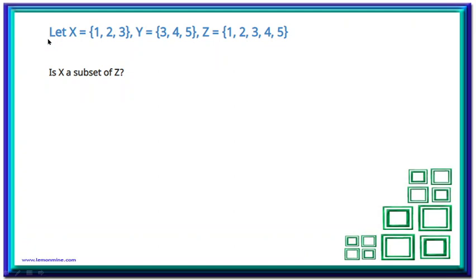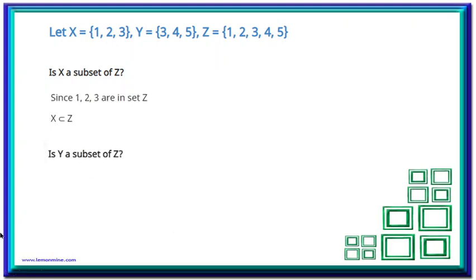Let's take one more example. We have taken three different sets. Is X a subset of Z? The definition says all the elements of X should be present in set Z — one, two, three — yes, they are present in Z. So we can say X is the subset of Z. Now, is Y a subset of Z? Three, four and five — yes, all three elements are present in Z. So we can say Y is the subset of Z.